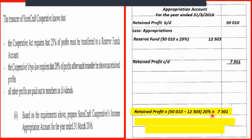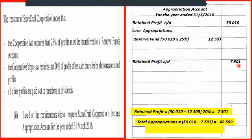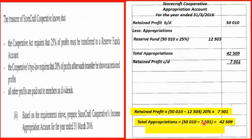Now what are the total appropriations? That would be $50,510 minus the retained profits, giving us $42,509. We can then calculate how much was paid out as dividend by subtracting $12,503 from $42,509, and we get, as a balancing figure, $30,006.